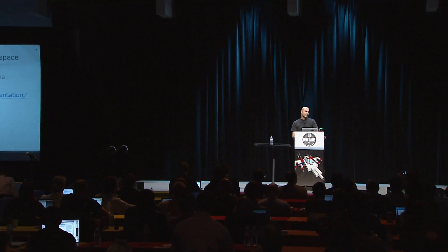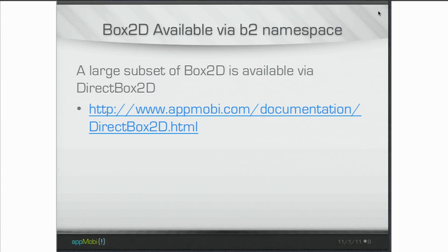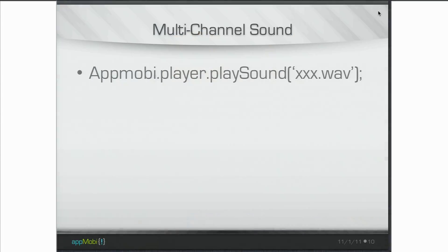We figured, why stop at accelerating the canvas when games need physics engines too? We included what we call direct Box2D in the browser itself. That's a hardware-accelerated version of Box2D via JavaScript. You can find that on our documentation page. Additionally, I heard on somebody's wish list — I think it was Darius — multi-channel sounds. We included a play sound API that actually provides multi-channel sounds.